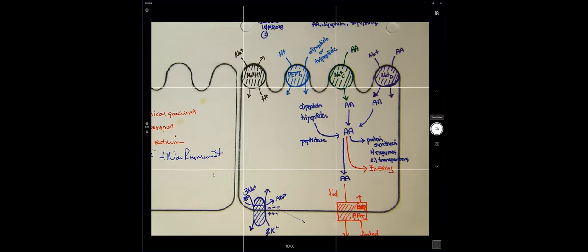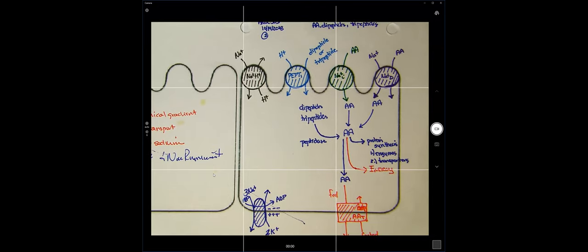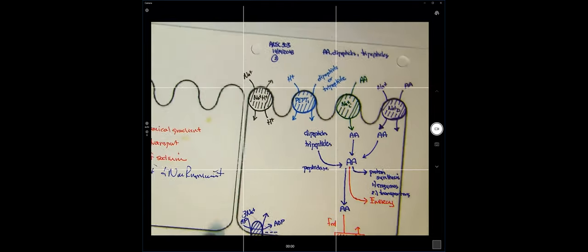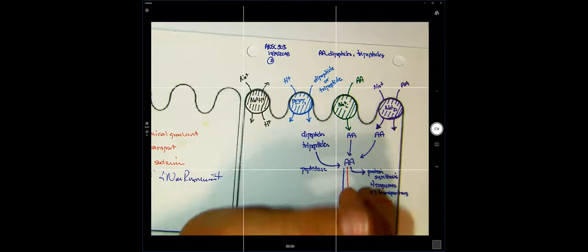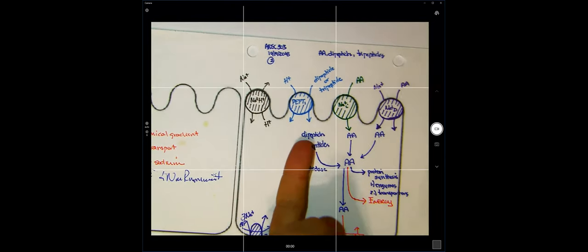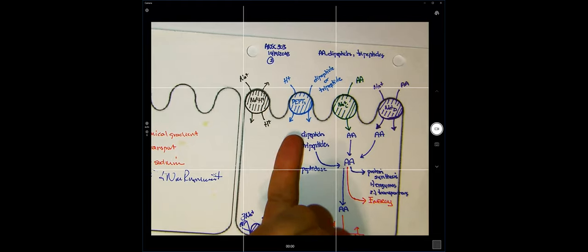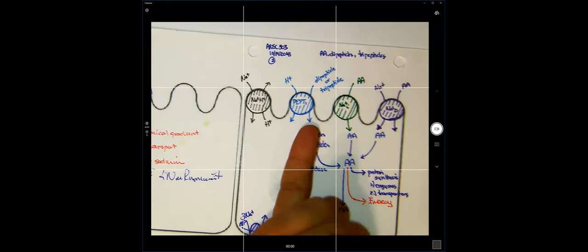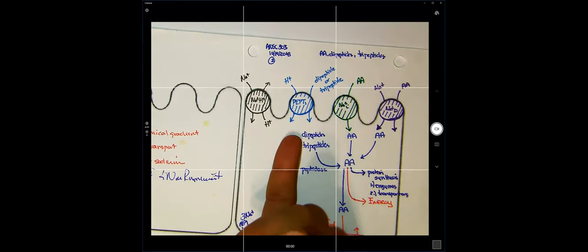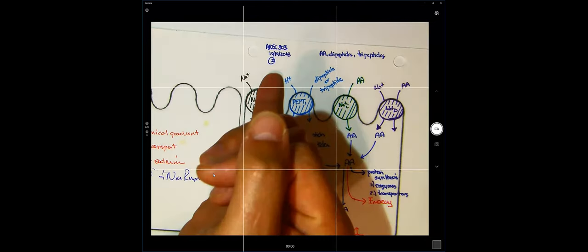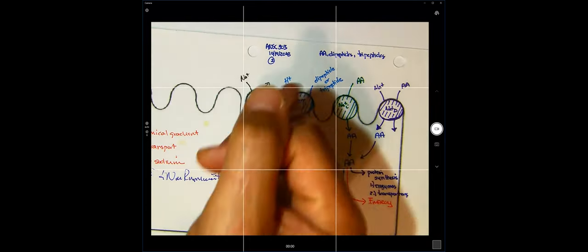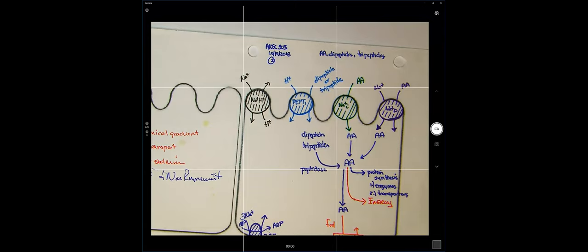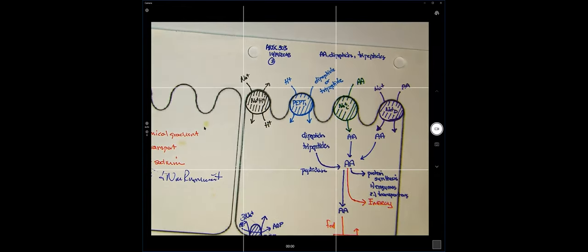If we have an enterocyte and three sodiums are pumped out at the expense of one ATP, that means we have three sodiums available to bring into the cell. If we want to maximize amino acid transport, we'd use the peptide transporter PEPT1. We can transport three tripeptides in, because PEPT1 brings in a proton and then pumps out a proton using one sodium. So we spin this three times, allowing us to bring in nine amino acids as three tripeptides, which are then broken down by peptidase into amino acids.